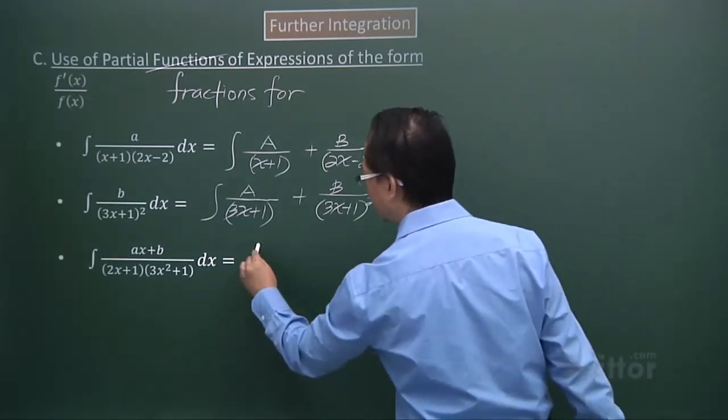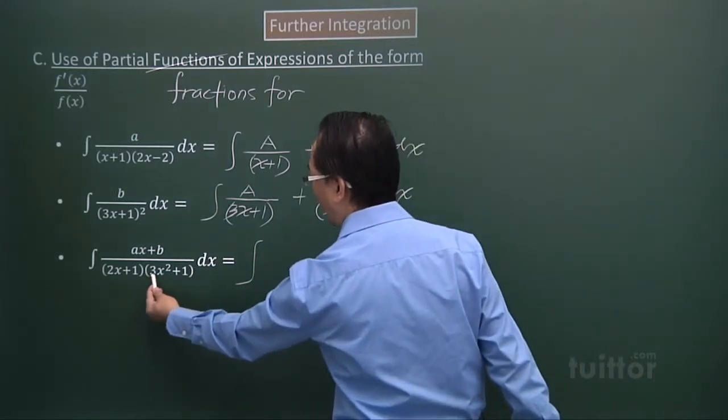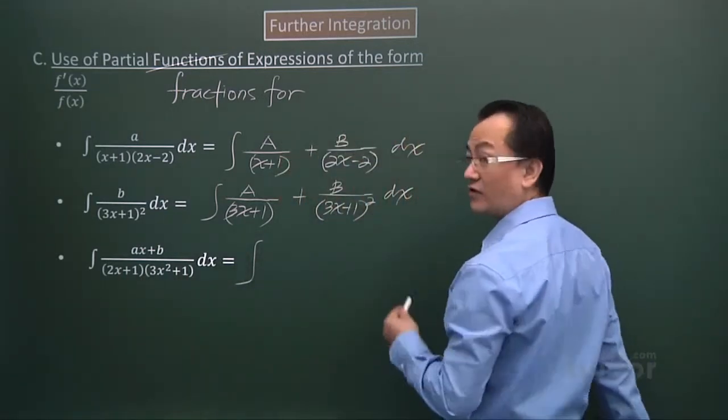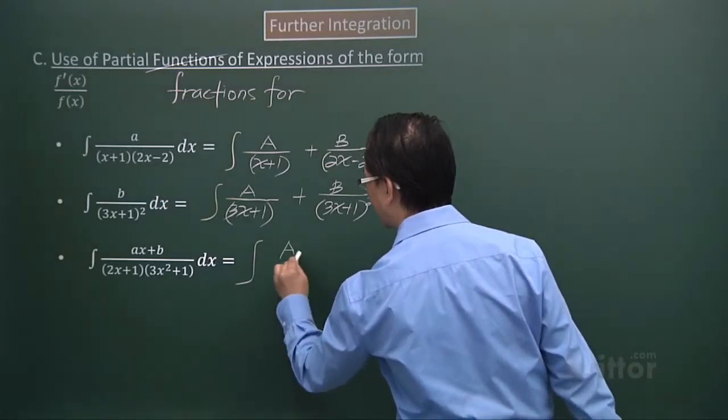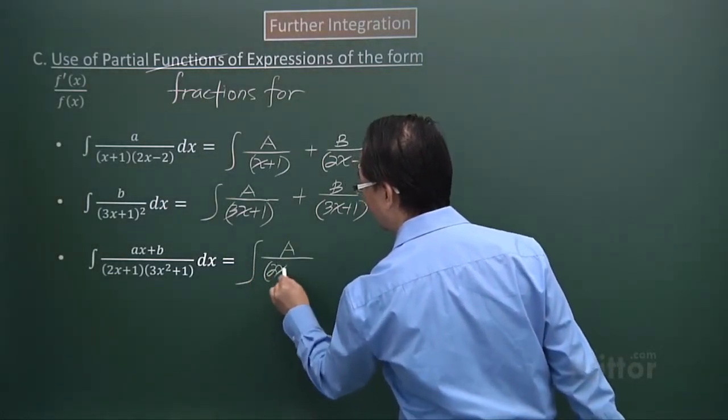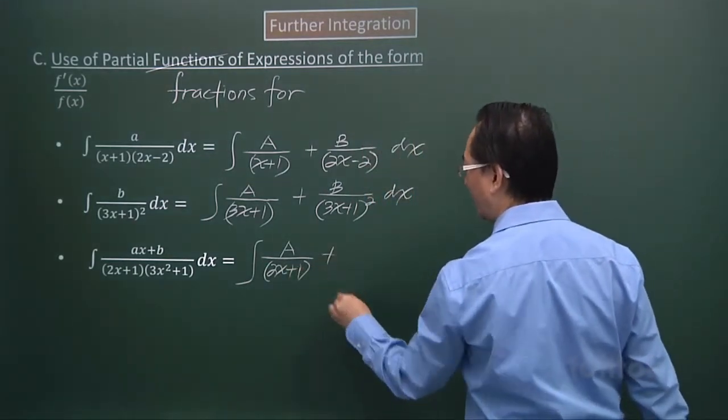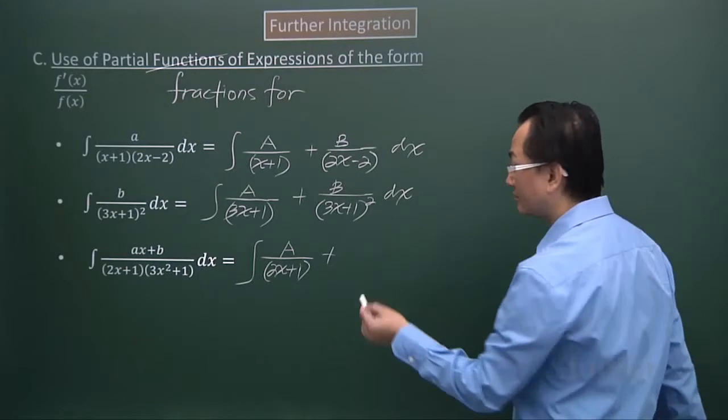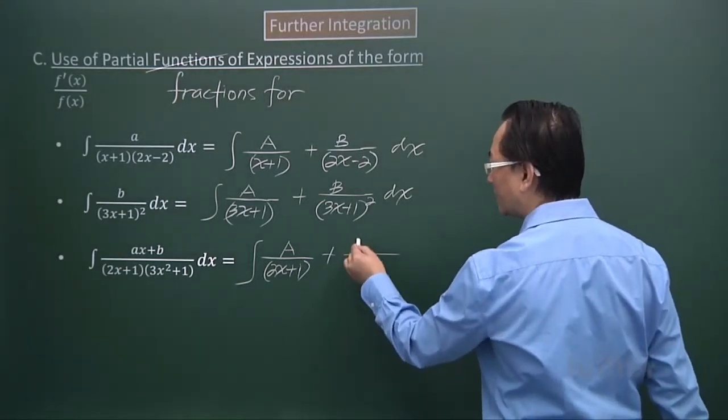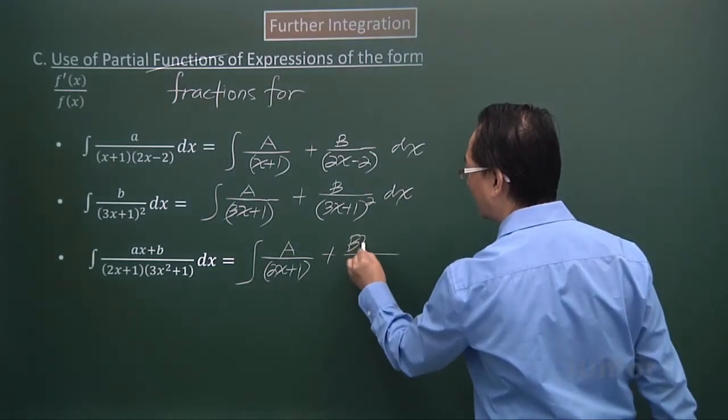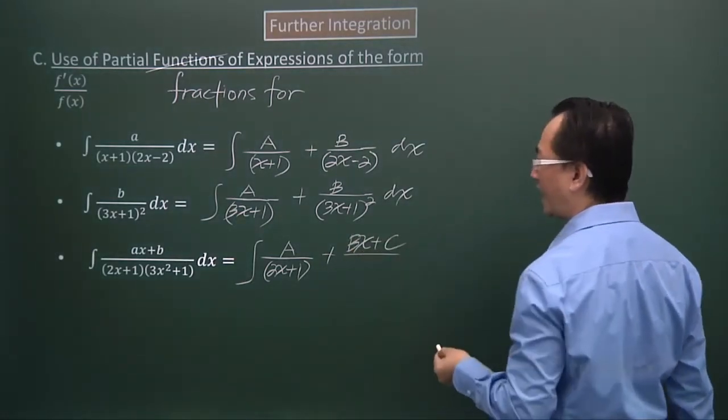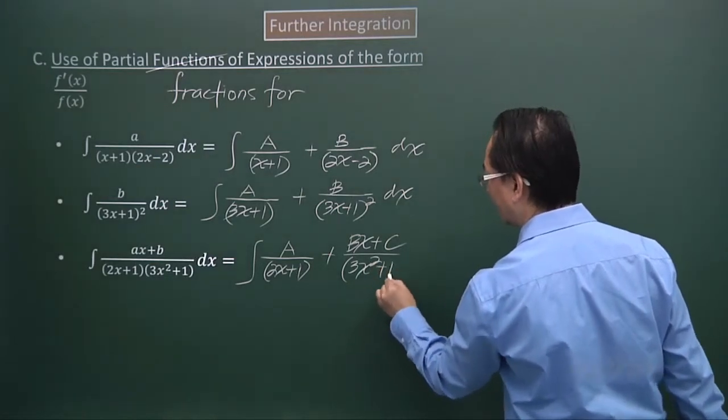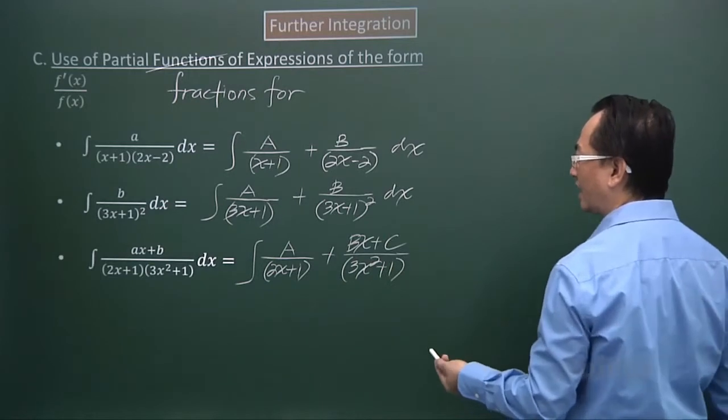In the third case, we have a quadratic expression that cannot be factorized, and also a linear factor. So for the linear factor, the fraction is A over the linear factor, 2x + 1, plus, since this is an unfactorizable quadratic expression, the numerator will not be a constant anymore, but will be a linear expression. Bx + C over the unfactorizable quadratic expression.